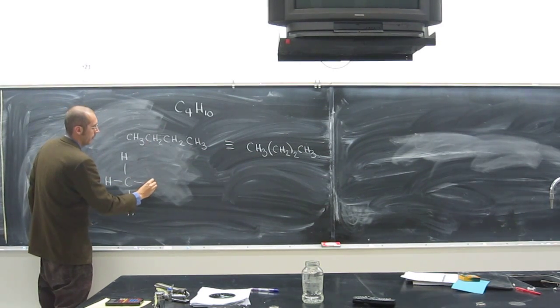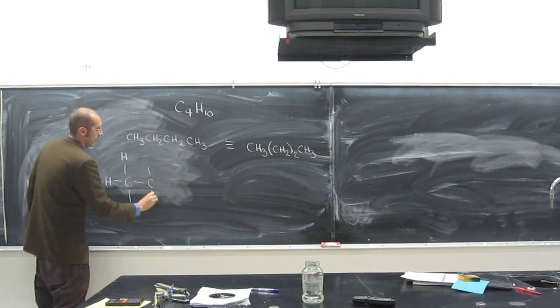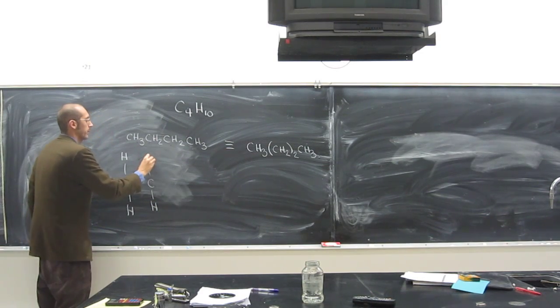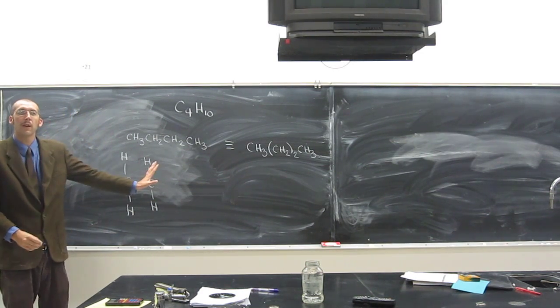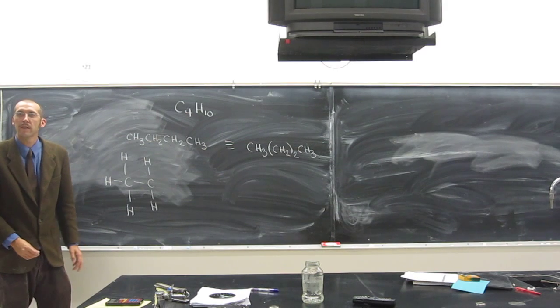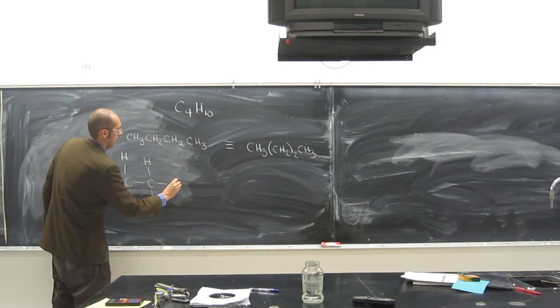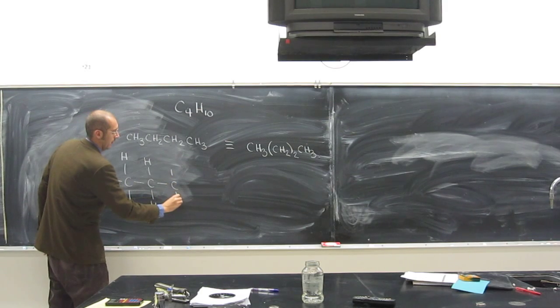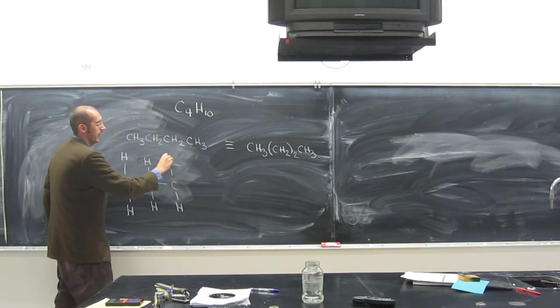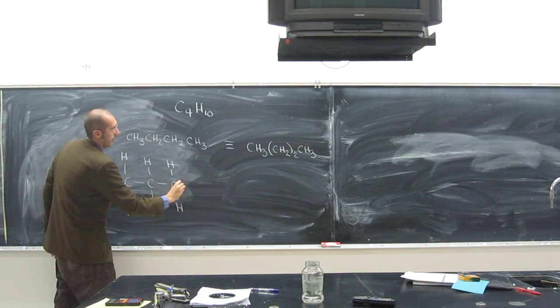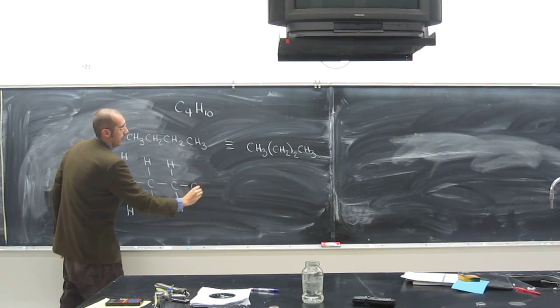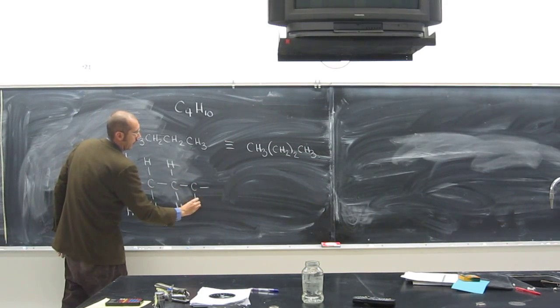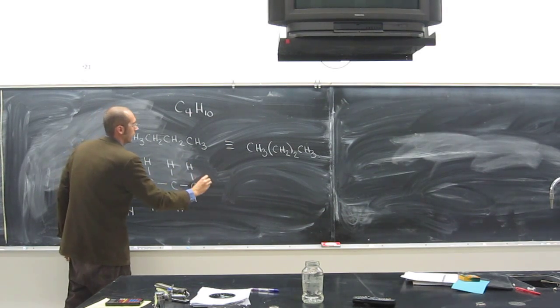So next would be C with two H's like that. Does this make sense? So the next one would be C, H and H there. Then C with H, H, and H. Very good. So that's the expanded structural formula.